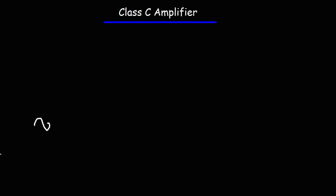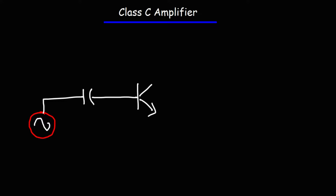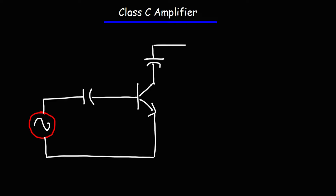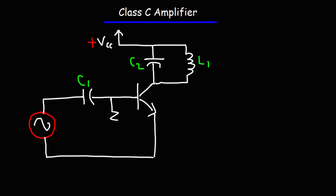The last amplifier we're going to talk about today is the class C amplifier. This particular amplifier only uses one transistor — it's not like the class B or class AB amplifier that uses two transistors. This amplifier is different from the others in that it is a tuned amplifier. It has an inductor and a capacitor in parallel with each other. We'll call this C2, C1, and L1. And then we have a resistor RB, attached to a negative voltage which we'll call negative VBB. That is the class C tuned amplifier.